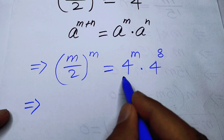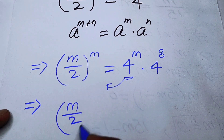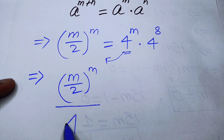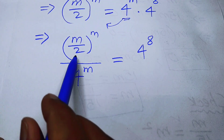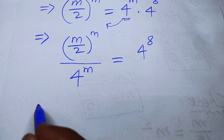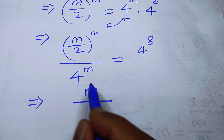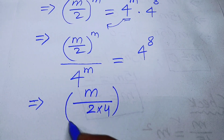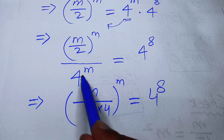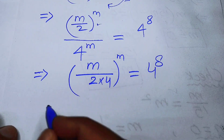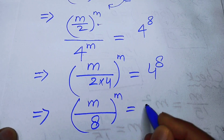Next, we move all terms with exponent m to the left-hand side, giving us (m/2)^m / 4^m = 4^8. Since the exponents are the same, we combine the bases: (m/8)^m = 4^8.